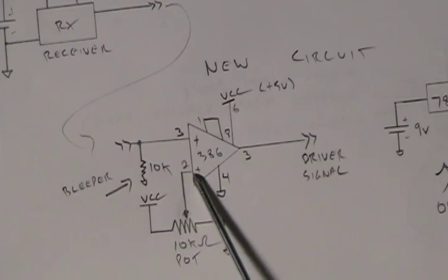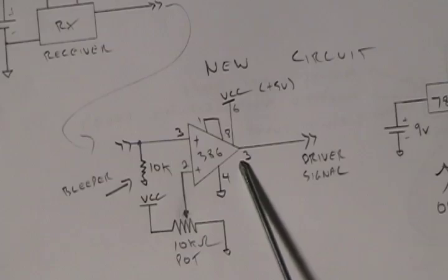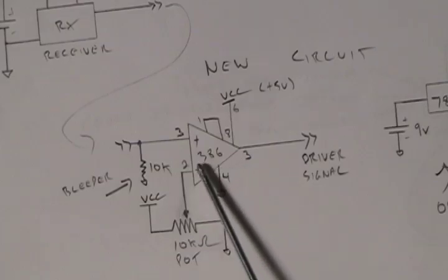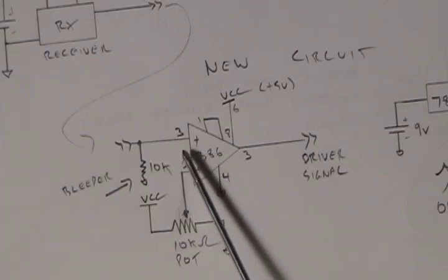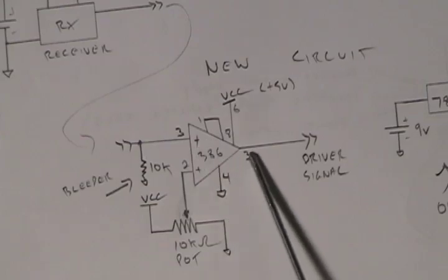So only when you activate the transmitter and you activate the signal line will the voltage here be higher than the voltage here. So when the voltage at the negative is higher than the voltage at the positive, the output will be low, it will be 0 volts. But when the voltage at the positive is higher than the voltage at the negative, when you activate the signal line, the output goes high.